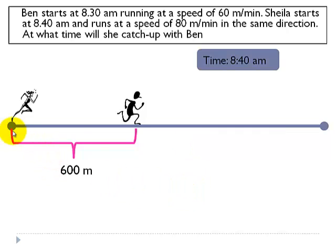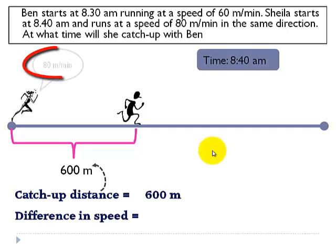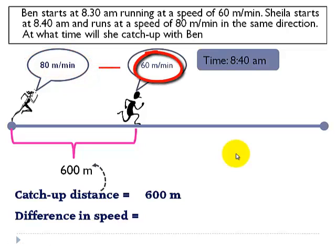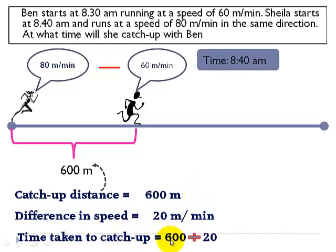Now, what we see here is the catch up distance is 600 meters. And what is the difference in speed between Ben and Sheila? The difference in speed is 80 meters per minute minus 60 meters per minute which gives us 20 meters per minute. Now, we know the catch up distance and the difference in speed. So the time taken for Sheila to catch up with Ben would be given by 600 which is the catch up distance divided by 20 which is the difference in speed. And that is equal to 30 minutes.